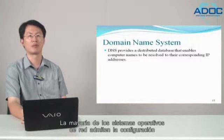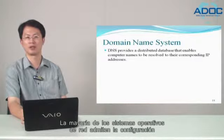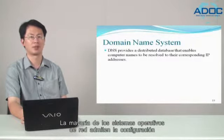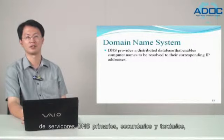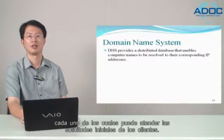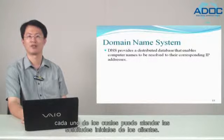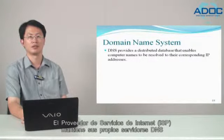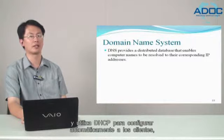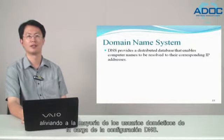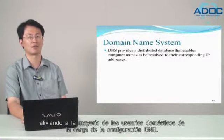Most network operating systems support configurations of primary, secondary, and tertiary DNS servers, each of which can service initial requests from clients. Internet service providers maintain their own DNS servers and use DHCP to automatically configure clients, relieving most home users of the burden of DNS configuration.